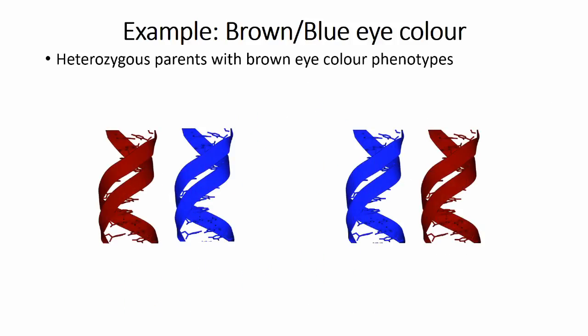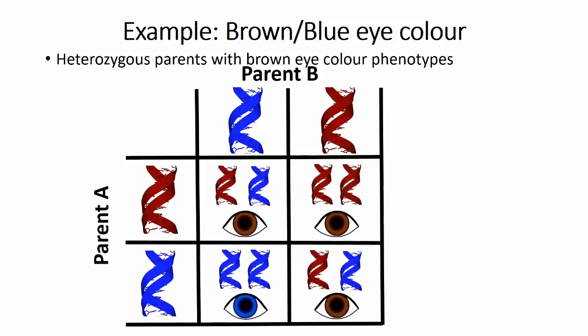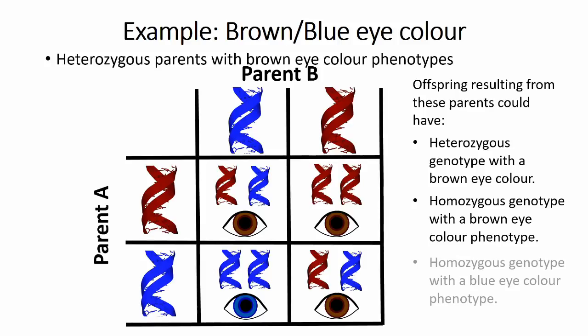If our two example parents were heterozygous instead, having one brown and one blue allele each and therefore a brown eye colour phenotype, we will see a different pattern arise. Filling in the table, we see that two out of the four possibilities are the same heterozygous genotypes as the parents, with a brown phenotype due to the dominance of the brown allele. The other two will have homozygous genotypes. In this case, there is a one in four chance that a child will have blue eyes, even though both parents have brown eyes. The parents are carriers of the blue allele and can pass on its effects, even though they don't show the effects of the gene themselves.